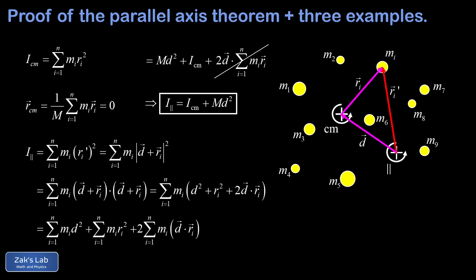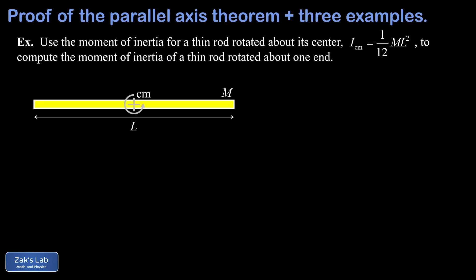In the first example, we use the moment of inertia for a thin rod rotated about its center, which is always the center of mass reference. That equals one-twelfth m L squared — I'll post a link to the derivation video. We want to compute the moment of inertia for the thin rod rotated about one end. The parallel axis is at one end of the rod, at a distance of L over 2 from the center of mass.